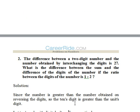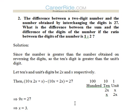Second question. The difference between the two-digit number and the number obtained by interchanging the digits is 27. There is one number and when we interchange the digits, the other number is 27 greater than the previous number. What is the difference between the sum and the difference of the digits of the number, if the ratio between the digits is 1 is to 2?